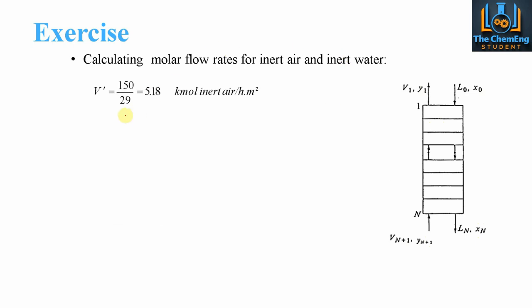So what we'll do is we now need to determine the values of V' and L'. So we know that we had 150, that's for the air, divided by the moles of the air, which is 29. So we know that the kilomoles of inert air per hour meters squared is 5.18. Likewise, we can do the same for L', whereby we have the flow rate divided by the molar mass of water, gives us 333 kilomoles of inert water per hour meters squared. So now we have the flow rates of the inerts, the air and the water.